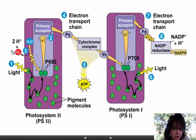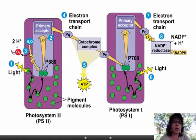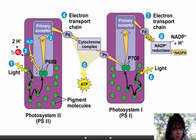Light hits them, electrons bounce around, electrons get ejected. These chlorophyll molecules are missing electrons because the primary electron acceptor has grabbed them literally, and we need to replace them. What happens is that this grabs electrons — it's a very strong oxidizing agent. It oxidizes these molecules so that it can get reduced, and it steals electrons from water molecules.